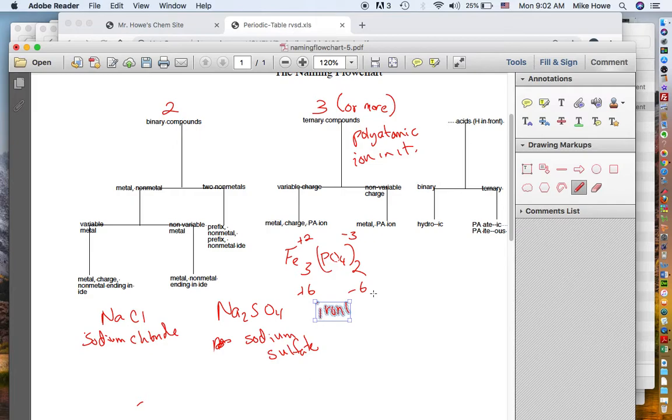Iron 2, phosphate. That's how you'd name a ternary compound.